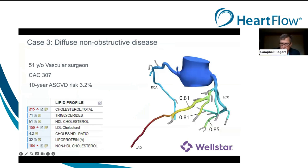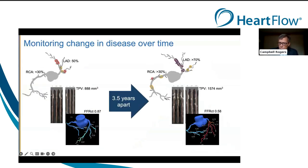Before going on to the third case, let me address a question about insurance coverage for plaque analysis in asymptomatic patients. Payer coverage for plaque is evolving. At this time there are no commercial payers who have stated coverage for plaque analysis. Some payers do allow coverage for the CTA component when there is a really high burden of risk factors in an asymptomatic patient, though even there it's relatively sparse. The pace of clinical evidence generation is evolving rapidly and we'll hear shortly about a new significant study.